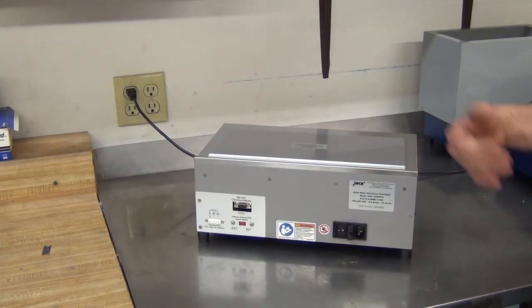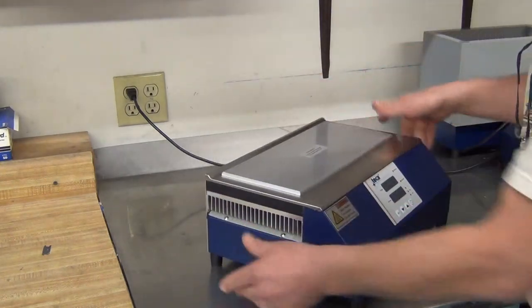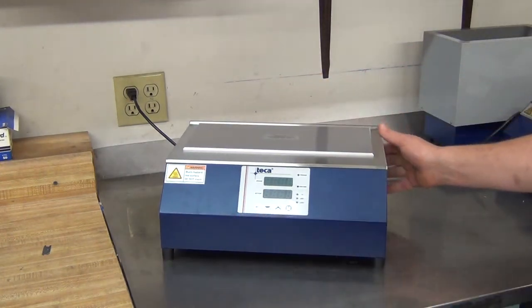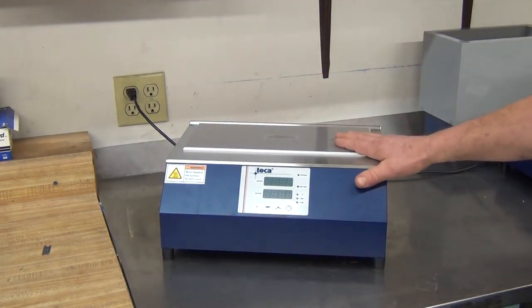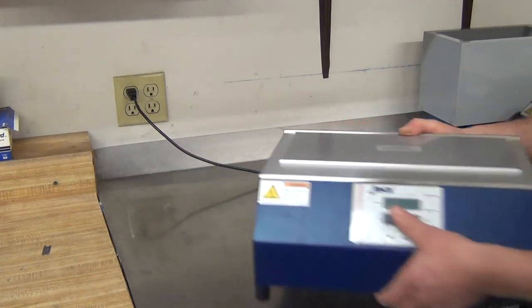Also RS232 communications and software come with it along with poor boys data logging. So there you have the smooth surface AHP 1200 CPV.